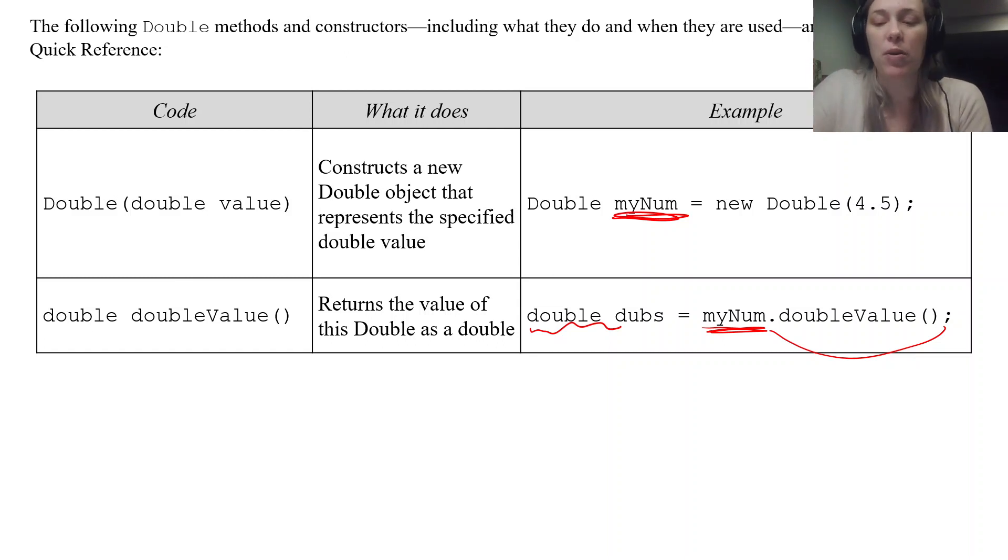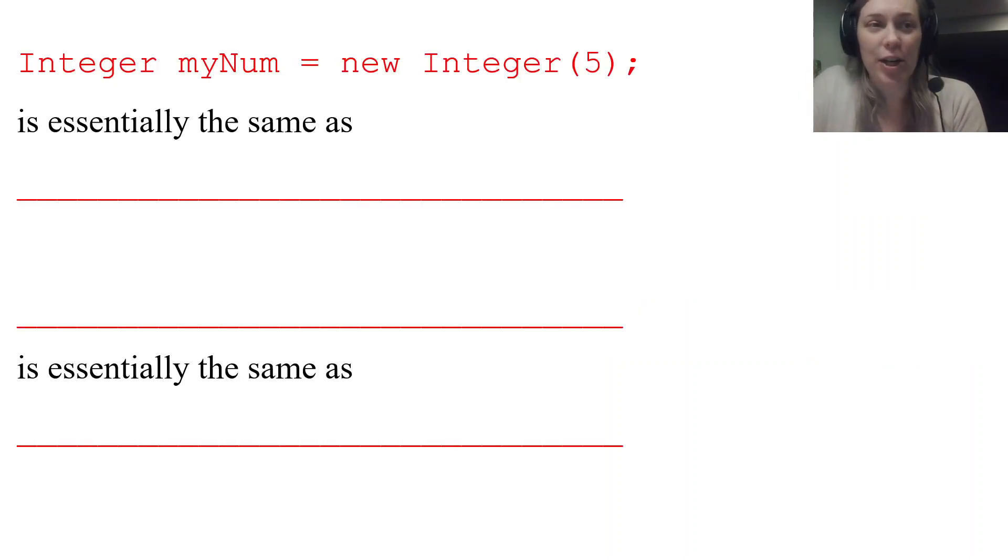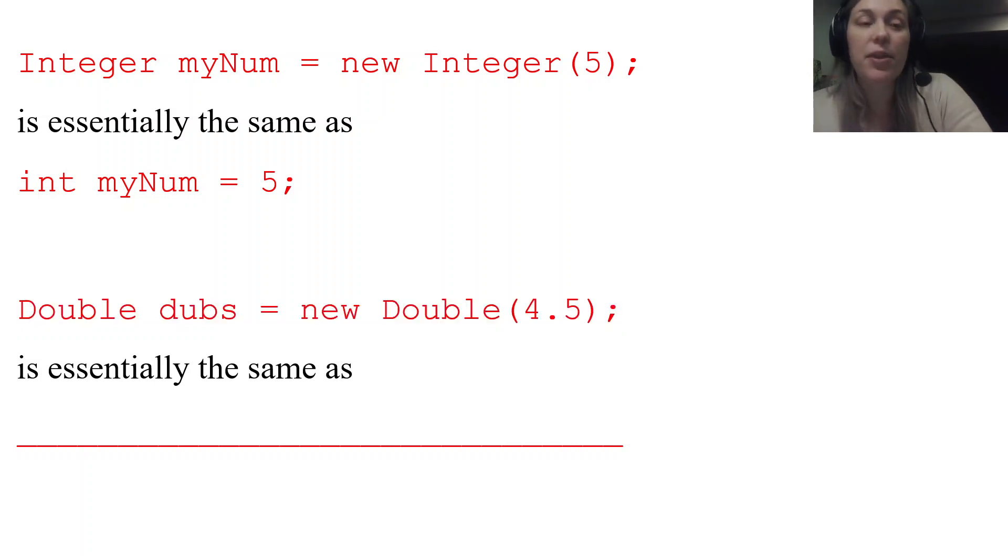All right so how does this relate to what we've already learned? So when I said Integer myNum equals new Integer 5, that is creating an Integer object. It's essentially the same as the primitive type, right, int myNum equals 5. One's just an object and one is a primitive data type. Same thing with the double. Double dubs equals new Double 4.5 is essentially the same as saying double dubs equals 4.5. One's just an object and one is primitive.